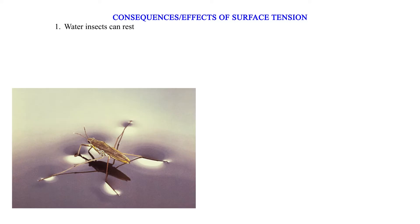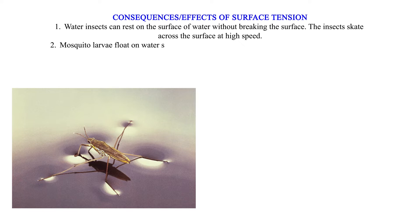Consequences/effects of surface tension. 1. Water insects can rest on the surface of water without breaking the surface. The insects skate across the surface at high speed. 2. Mosquito larvae float on water surface. Oiling the surface using kerosene lowers surface tension, making larvae sink.